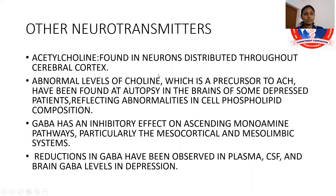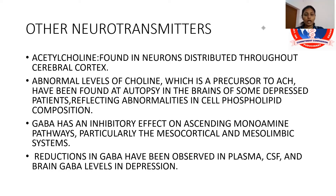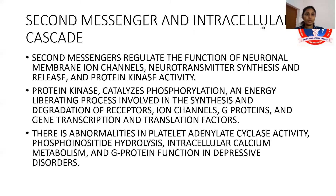Other neurotransmitters include acetylcholine, found in neurons distributed throughout the cerebral cortex. Abnormal levels of choline — a precursor to acetylcholine — have been found at autopsy in the brains of some depressed patients, reflecting abnormalities in cell phospholipid composition. GABA has an inhibitory effect on ascending monoamine pathways, particularly the mesocortical and mesolimbic systems. Reductions in GABA have been observed in plasma, CSF, and brain GABA levels in depression.